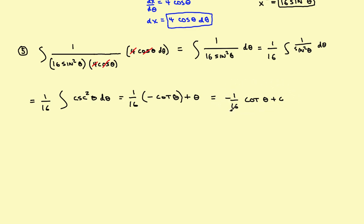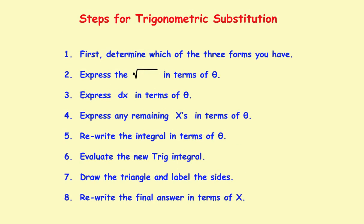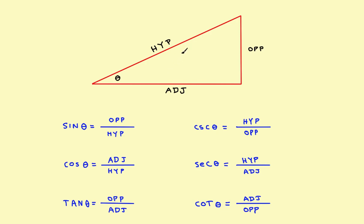Now we have the answer in terms of theta, but we need to convert it back into x. Step 7: draw a triangle and label the sides, then change the answer back in terms of x. As a reminder, on any right triangle, sine equals opposite over hypotenuse, cosine equals adjacent over hypotenuse, tangent equals opposite over adjacent, and so on.